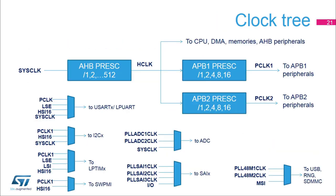The clock tree is shown here. The AHB clock is generated from the system clock divided by the AHB prescaler from 1 to 512. The AHB clock feeds the CPU, DMA, memories, and AHB peripherals. The two APB clocks are derived from the AHB clock divided by the APB1 and APB2 prescalers, each from 1 to 16. Several peripherals have their own clock independent from the system clock.